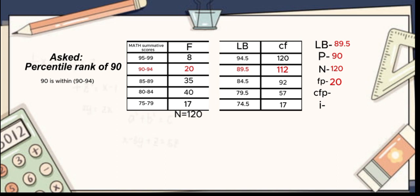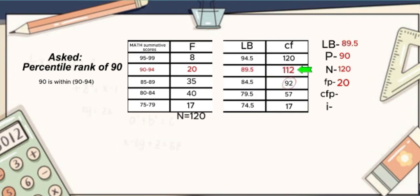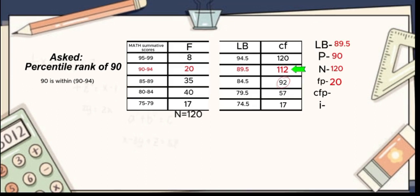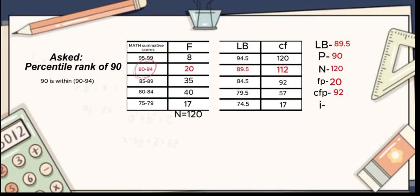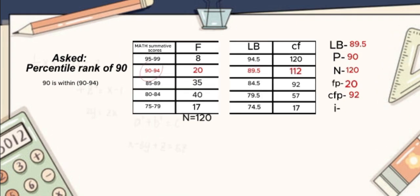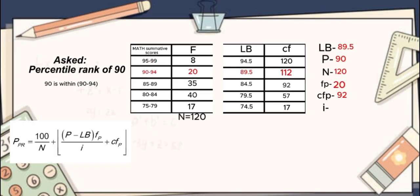Our CFP, it means the cumulative frequency below the critical value. Follow the green arrow, that is our cumulative frequency, but below 112 is 92, so we should write 92. Last is the I or interval. Since 90 is within 90 to 94, just count 90 to 94 and all in all is 5, so our I is 5. We are done filling up our needed variables.